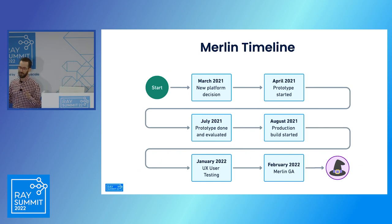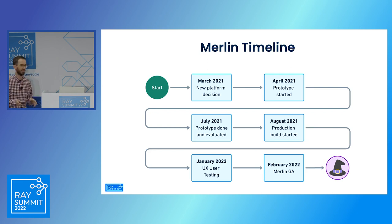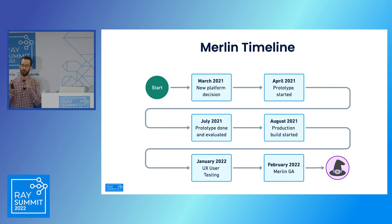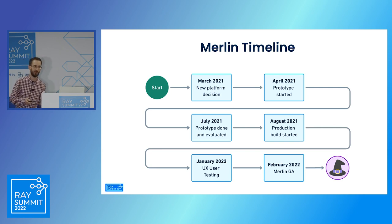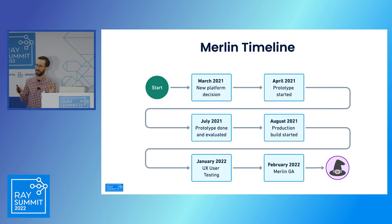Just a couple of words about the timeline. We made a decision to rebuild our machine learning platform in March 2021. Then we went into a prototyping phase and POC around different open source tools. In August, we started building our production environment. And then earlier this year, in February, we released Merlin as generally available for all of our data scientists and machine learning engineers.